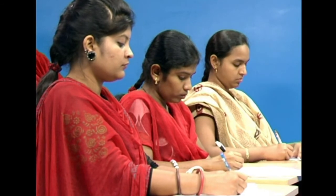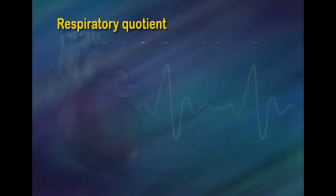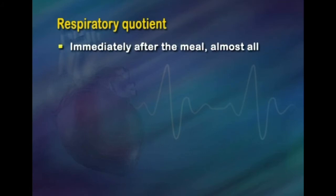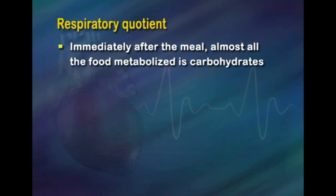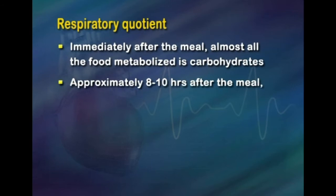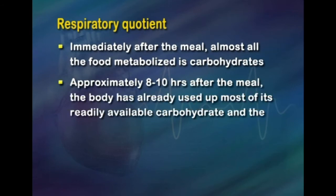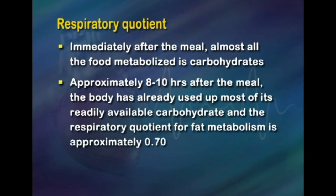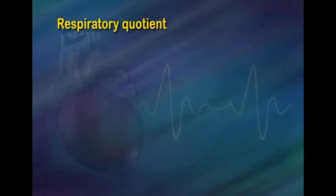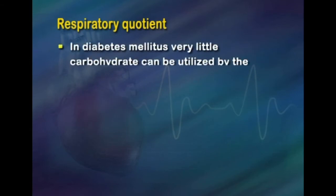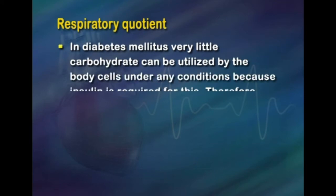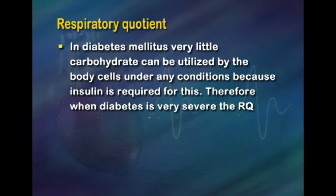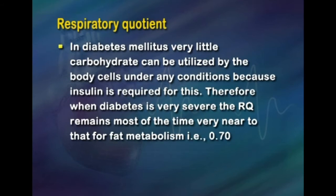Important findings from studies of RQ: immediately after a meal, almost all the food metabolized is carbohydrate, so the RQ approaches 1. Approximately 8 to 10 hours after a meal, the body has used up most of its readily available carbohydrate and the RQ approaches that of fat metabolism, which is approximately 0.7. In diabetes mellitus, very little carbohydrate can be utilized by body cells because insulin is required; therefore when diabetes is very severe, the RQ remains near that of fat, 0.7. This provides another test for diabetes.